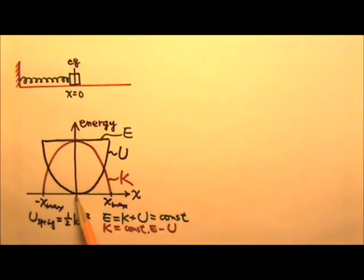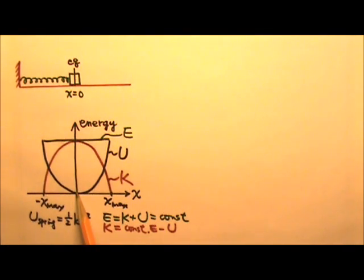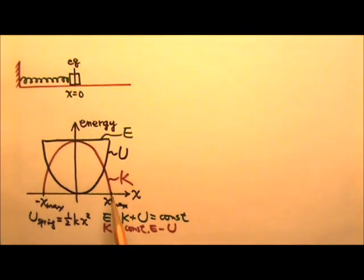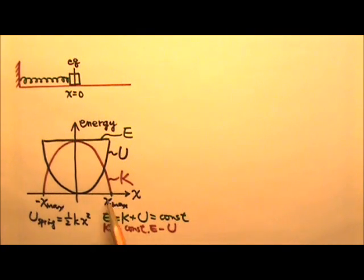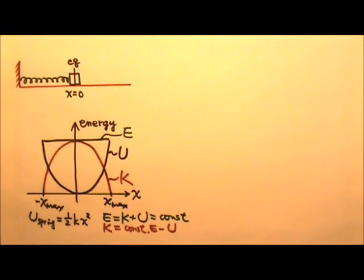This also matches what we know. At x equals zero, the equilibrium, the potential energy is zero while the kinetic energy is at maximum. At the end points — negative amplitude and positive amplitude — the potential energy is at maximum when the kinetic energy is zero.